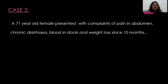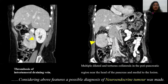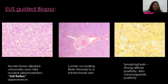My third case is a 71-year-old female who presented with pain in the abdomen, cloning diarrhea, blood in stools, and weight loss since 10 months. On CECT, an ill-defined soft tissue density mass lesion was seen in the right paracolic gutter on the lateral aspect of the distal ascending colon, displacing the colon medially. It was supplied by a dilated tortuous middle colic artery and drained by the middle colic vein, showing homogeneous post-contrast enhancement. A sagittal image demonstrated thrombosis of the intratumoral draining vein, and coronal images showed multiple dilated collaterals in the peripancreatic region near the head of the pancreas. EUS-guided biopsy confirmed NET. High-power histopathology showed nuclear pleomorphism with a salt-and-pepper appearance, and a tumor-occluding fibrin thrombus was seen in an intratumoral vein.